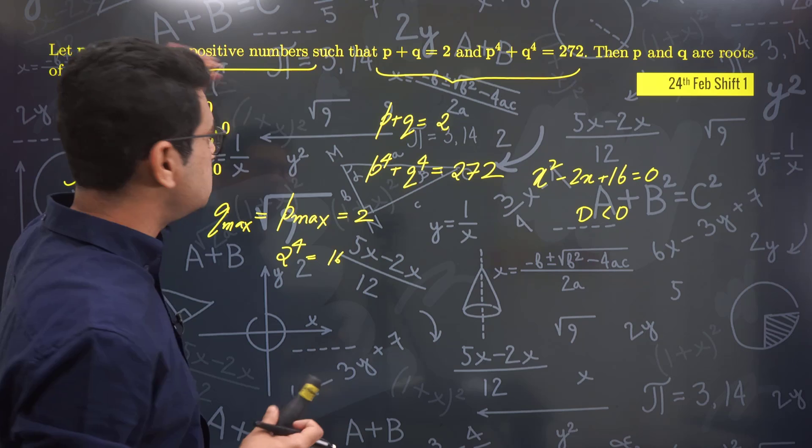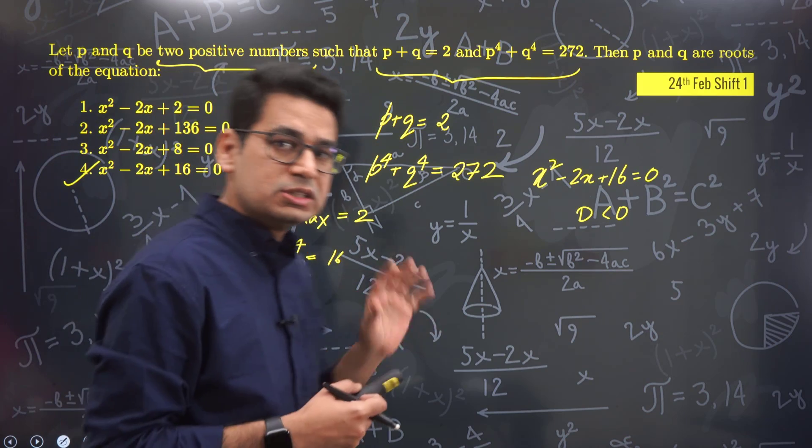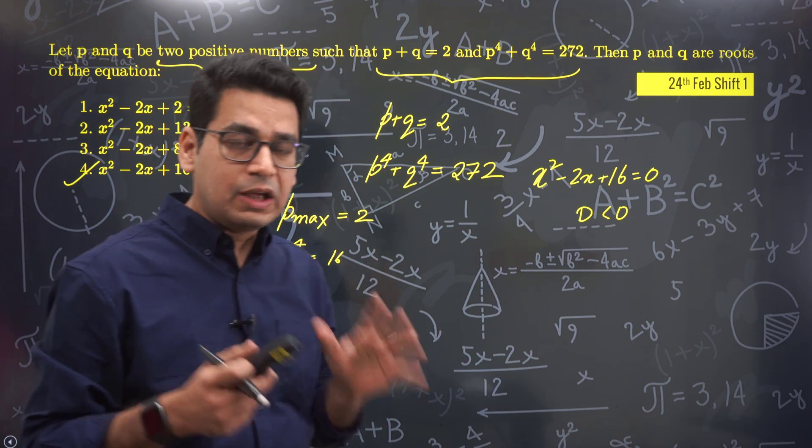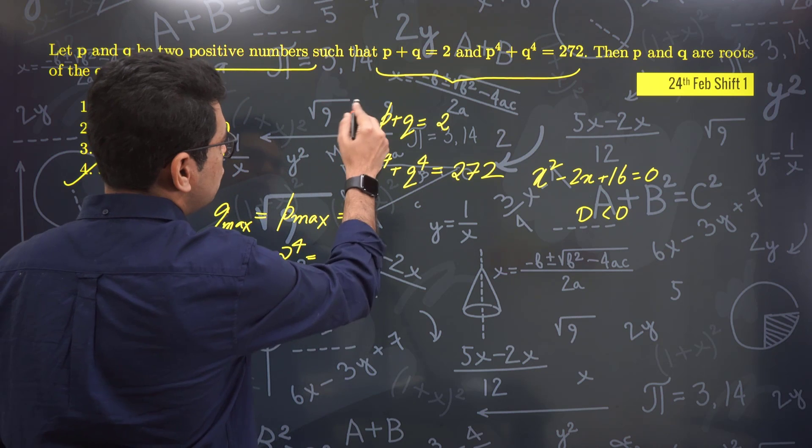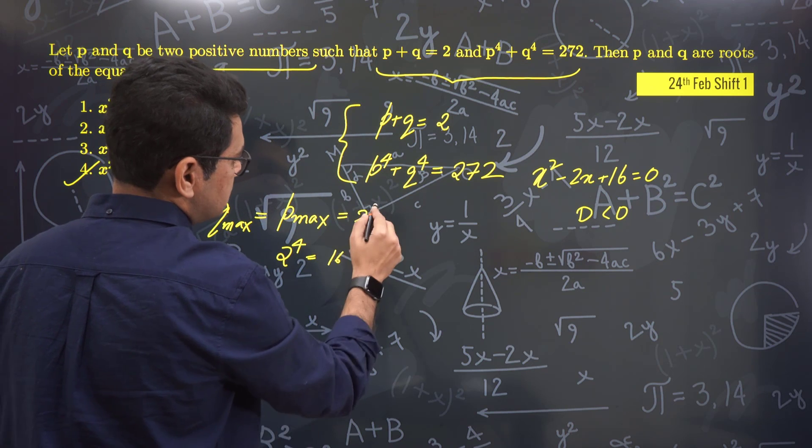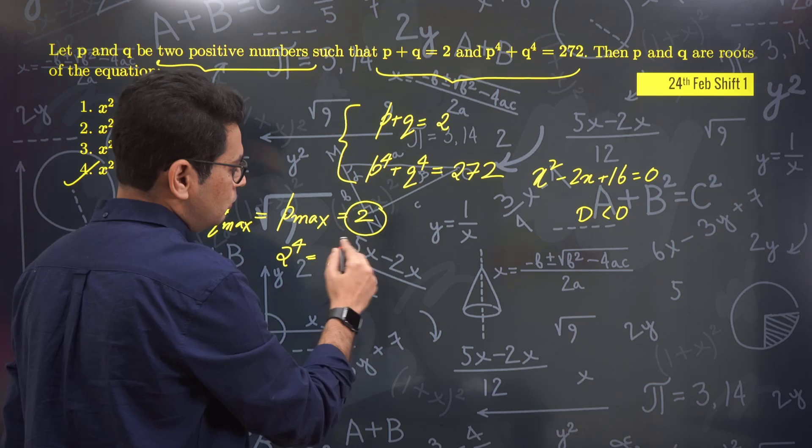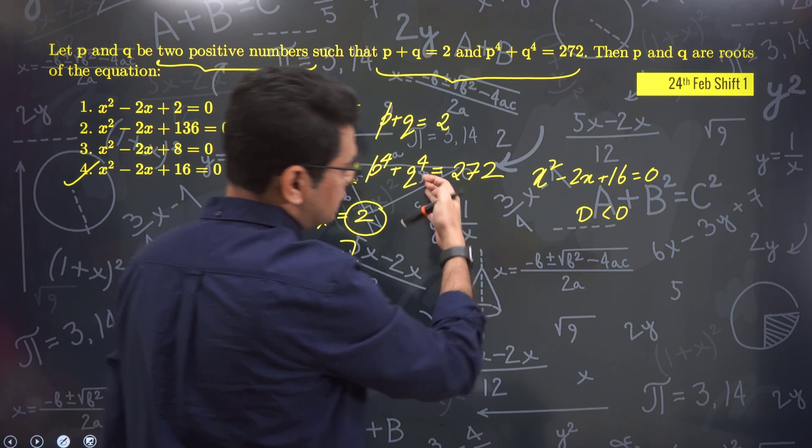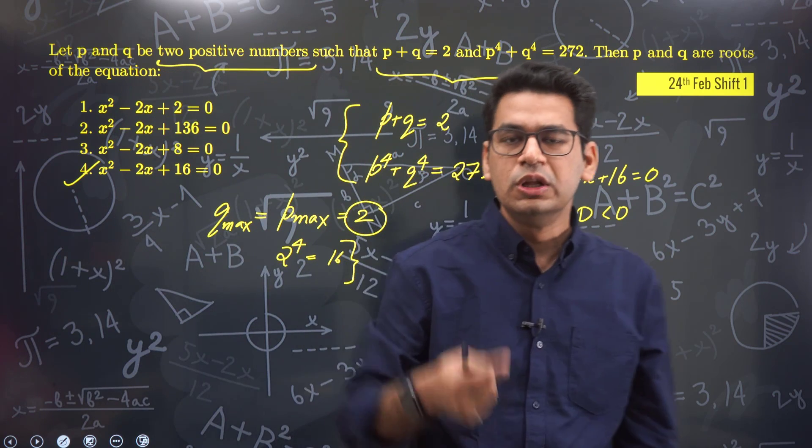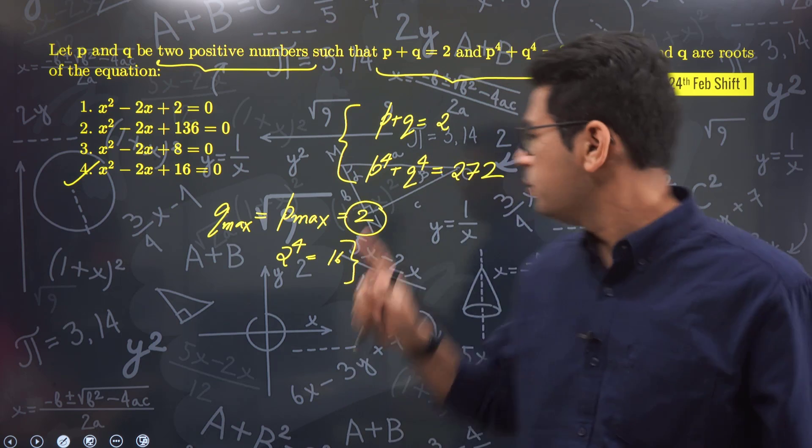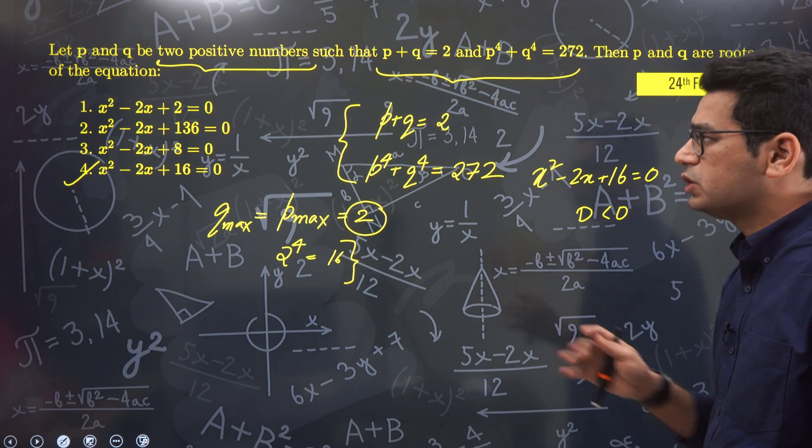There was no sense of saying positive numbers. They should have said positive real parts or something of that sort. But if I have to solve this question, I would be confused - how is this possible? Even if p maximum value is 2, maximum answer should be 32. How can it go to 272? So I think this question from 24th Feb shift 1 should be a sure shot bonus.